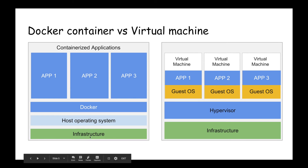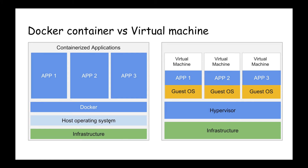On the left hand side of the diagram you can see that we have the infrastructure, above which we have the operating system, on which Docker is installed. Using Docker we can run multiple applications, and Docker also ensures that one application will not interfere with any other application.